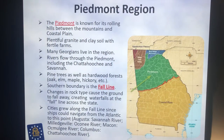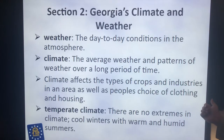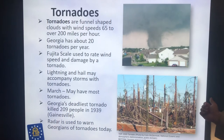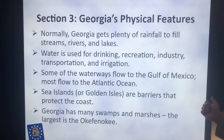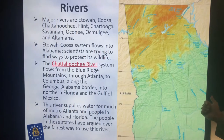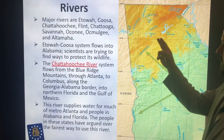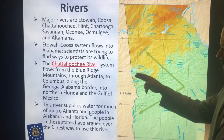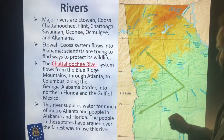There are a few other key geographical things that we need to look at in Georgia. The Chattahoochee River starts here and follows all the way down, becoming the border between Alabama and Georgia.